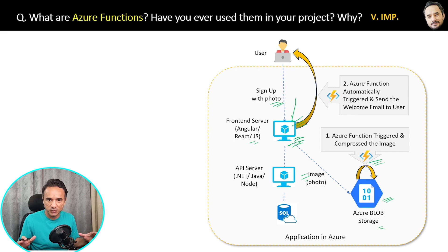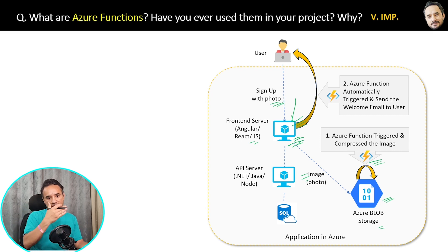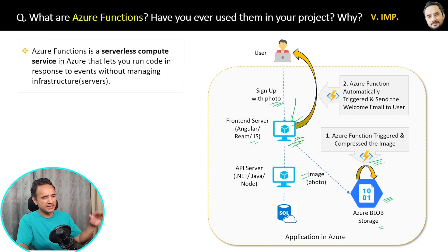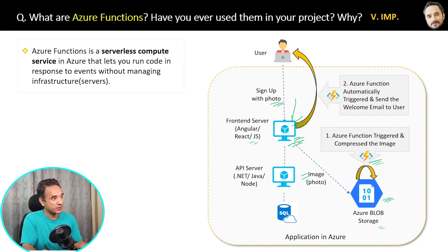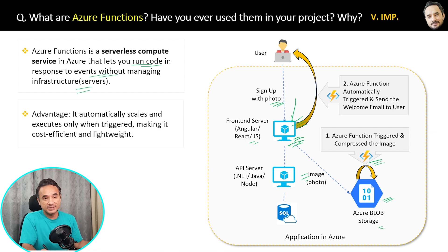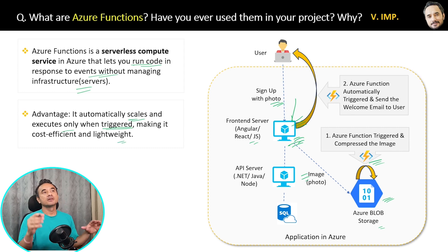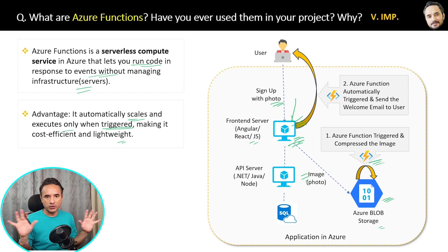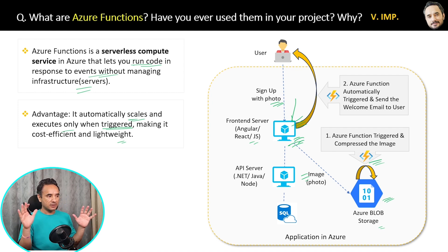Now I am sure the purpose of Azure Functions is 100% clear. It is used to trigger some activity — some code is written inside it which activates whenever there is a trigger. Here is the simple definition: an Azure Function is a serverless compute service in Azure that lets you run code in response to events without managing infrastructure. The advantage is it automatically scales and executes only when triggered, making it cost-efficient and lightweight. Only when it is triggered does it cost you — otherwise it costs nothing.